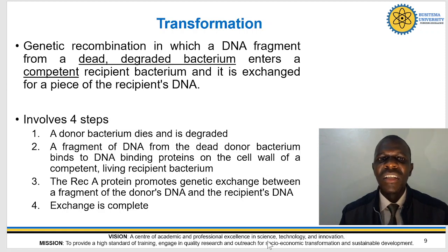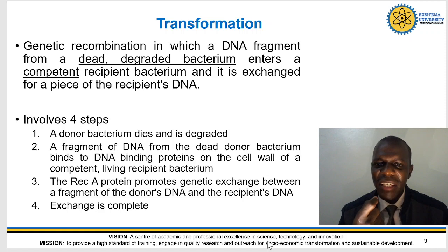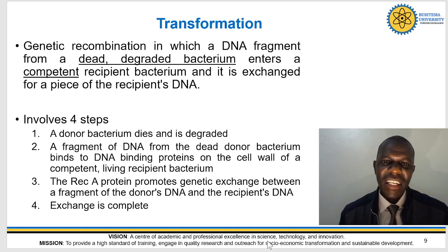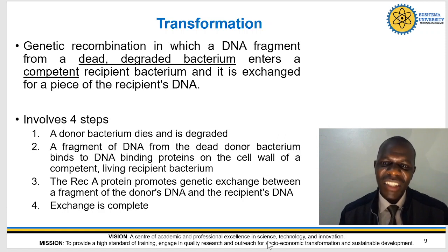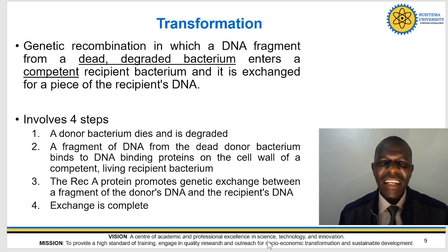Transformation is genetic recombination in which a DNA fragment from a dead, degraded bacterium enters a competent recipient bacterium and is exchanged for a piece of the recipient's DNA. It involves four steps: first, a donor bacterium dies and is degraded. Then a fragment of DNA from the dead donor bacterium binds to DNA binding proteins on the cell wall of a competent living recipient bacterium. Then the recombinase protein promotes genetic exchange between a fragment of the donor's DNA and the recipient's DNA, and once that exchange is complete, that is transformation.